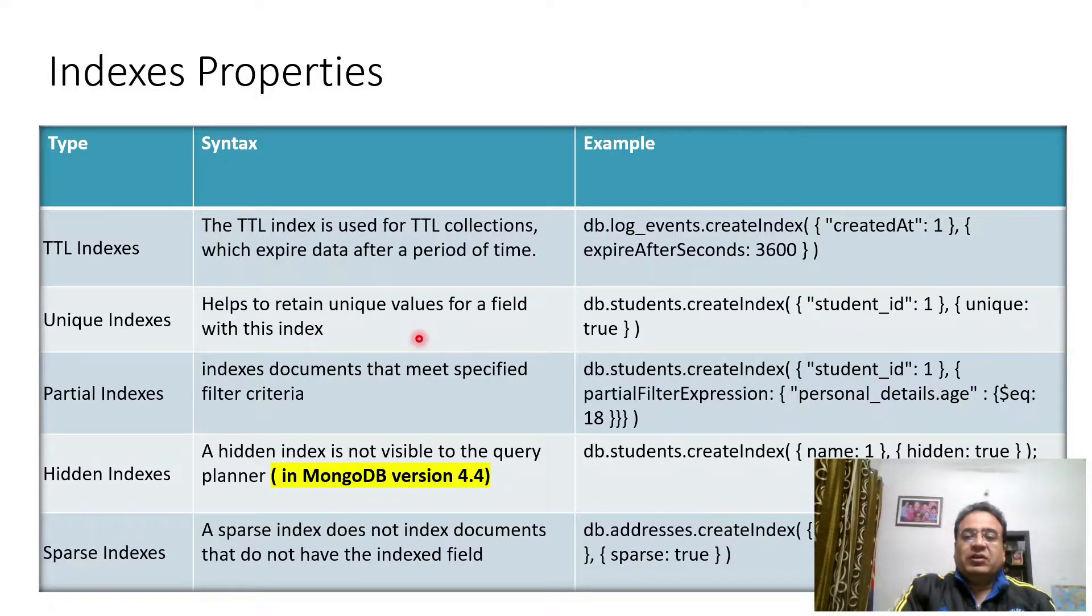Then partial indexes. This is very useful in case we want to filter out on some field and we want to fasten the search. For example, we want to have partial index created on student ID in ascending order and we also want to create an index on the other field with filter expression. This is syntax: partial filter expression personal details dot age equal to 18. It can be greater than equal to, it can be less than equal to. There can be other parameters also.